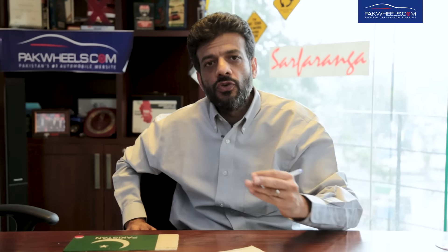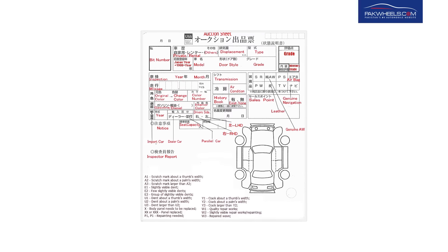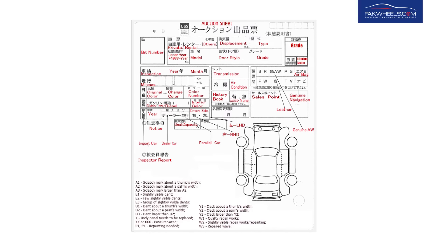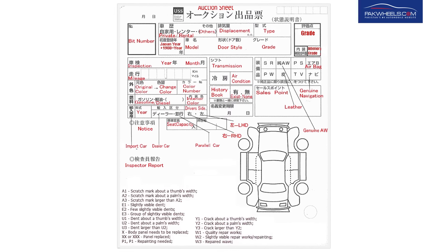Every auction sheet has codes like A1, A2, U1, U2 — it is a very long glossary. We will attach it on the Park Wheels forum where we have written a blog. In every auction sheet glossary you can decode what each code means: A1 is a very small scratch, U1 is a small dent, W1 indicates a repair trace, and there are also rust signs. The auction sheet gives a true depiction of the car's condition.